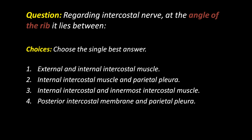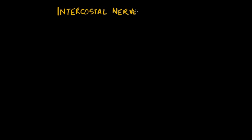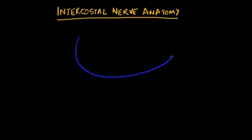The answer is that the nerve lies between the internal intercostal and the innermost intercostal muscle. To understand this, we need to know the origin, the relationship, and the branches of the intercostal nerve. So let's have a closer look at intercostal nerve anatomy.